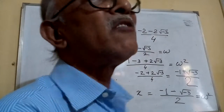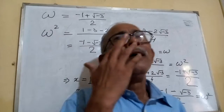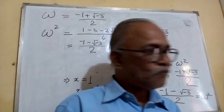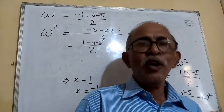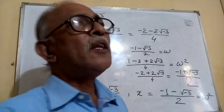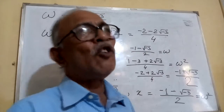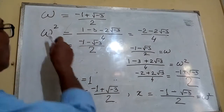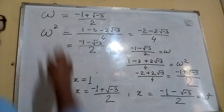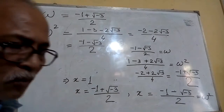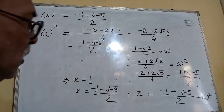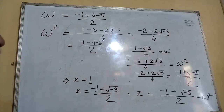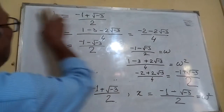You cannot find any such number in real numbers where this is possible. If two squared is four, then four squared cannot be two. But here, omega squared is the other root, and the other root squared is omega. So in this way, we are making three cube roots of one.